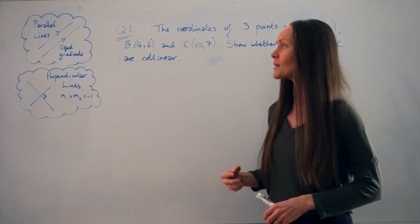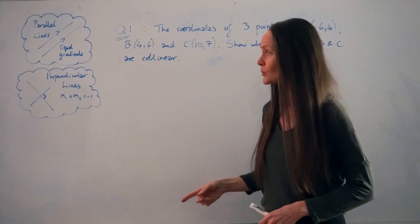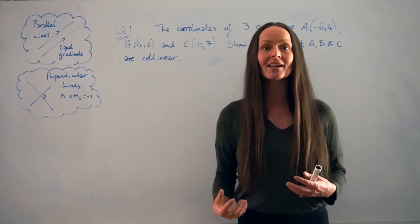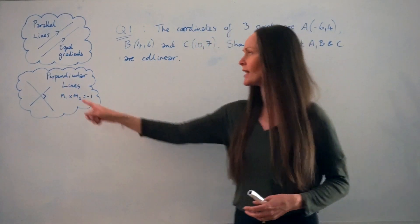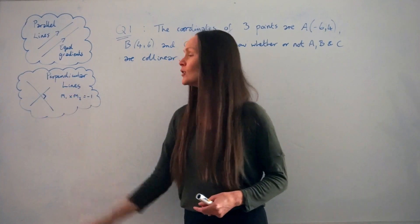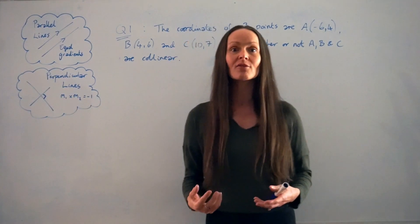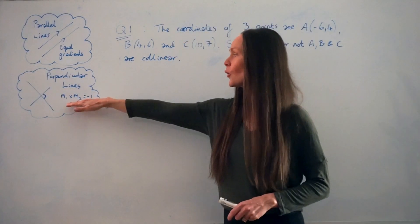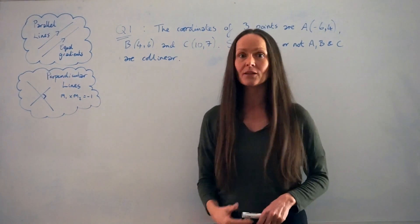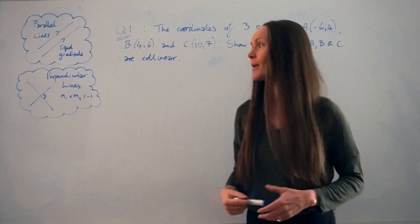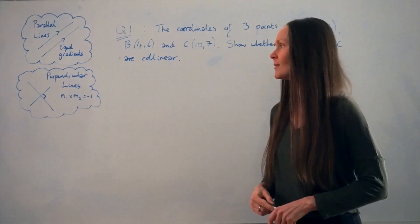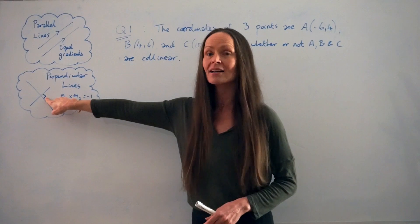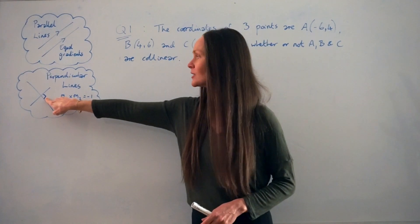And if lines are perpendicular to each other, like in this diagram, if you take the two different gradients of these lines and multiply them together, you should always find it equals negative 1 when they're perpendicular. Remember, perpendicular means they cross at an angle of 90 degrees.